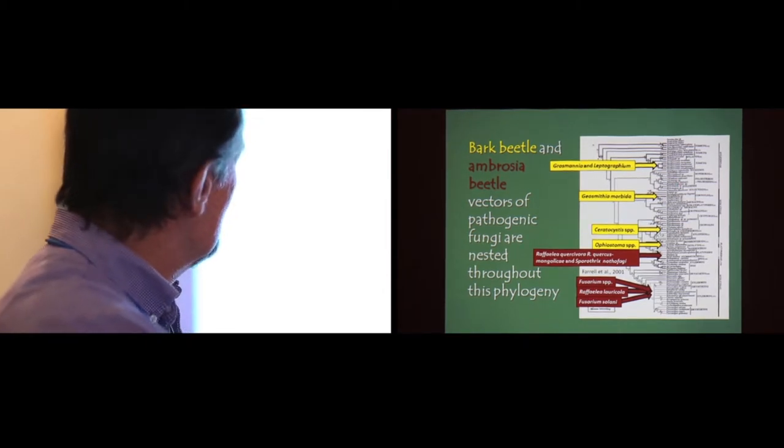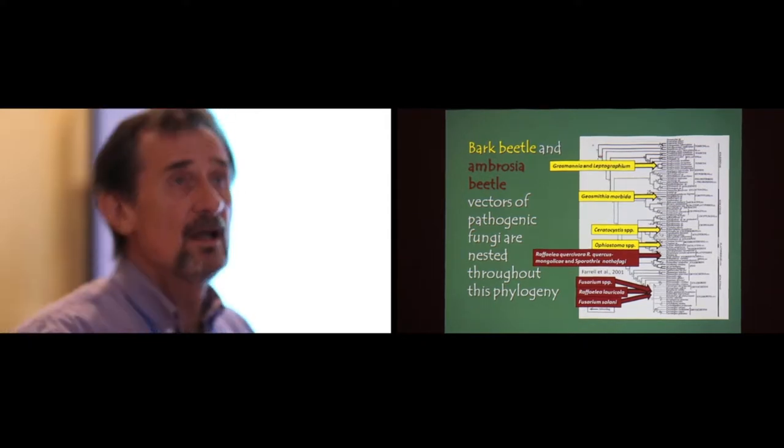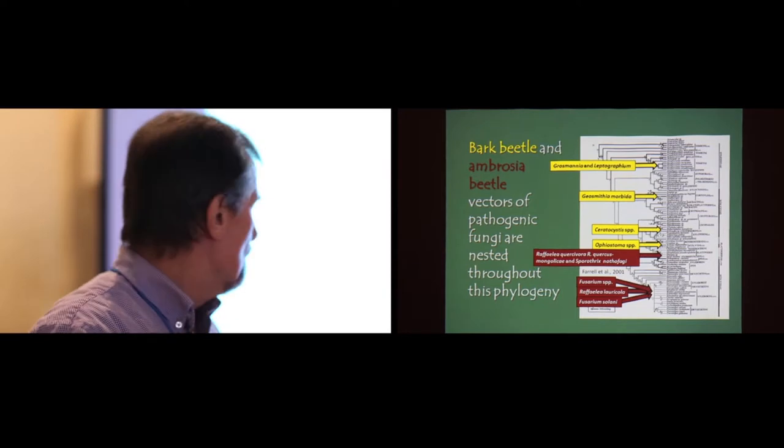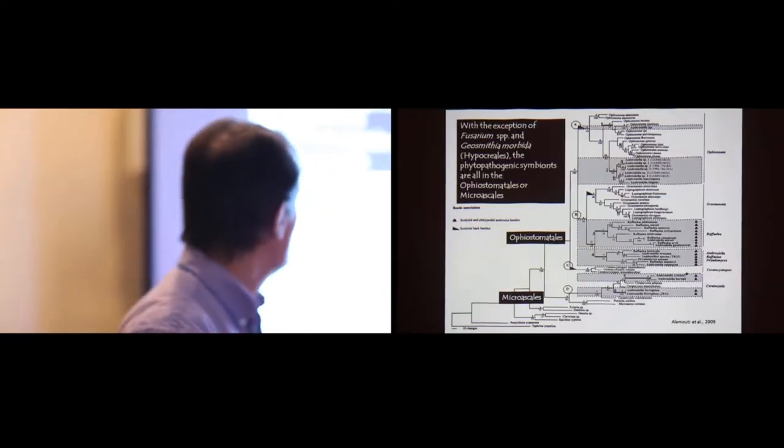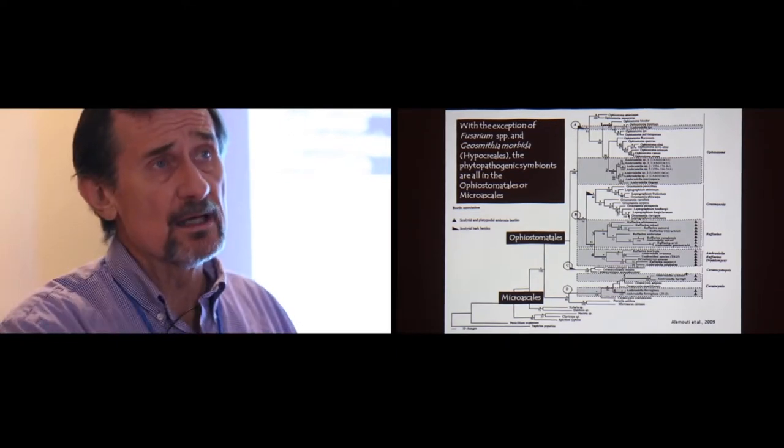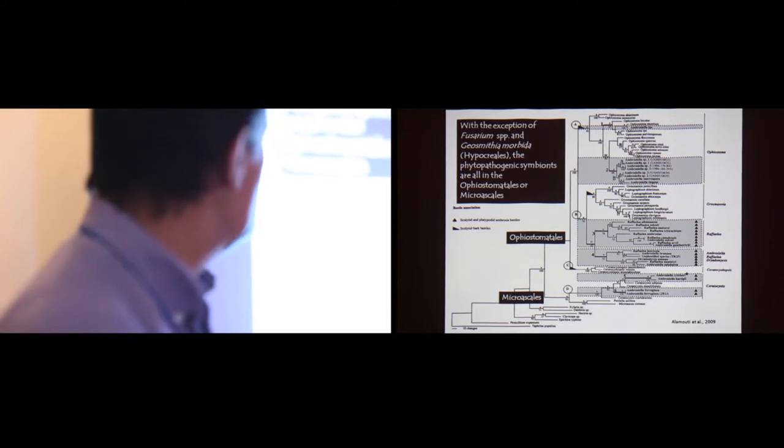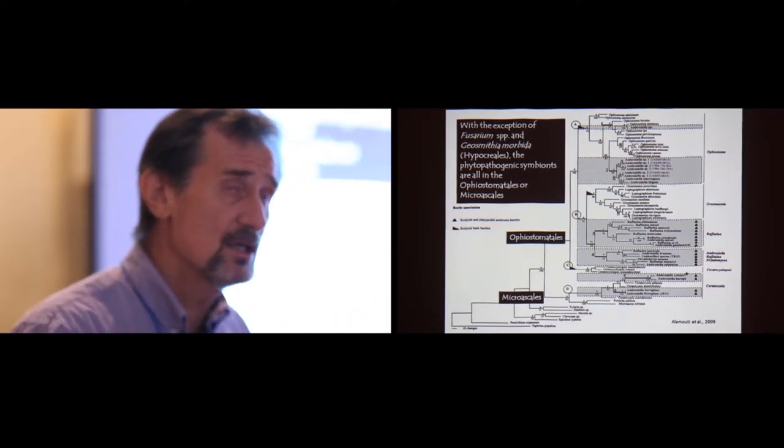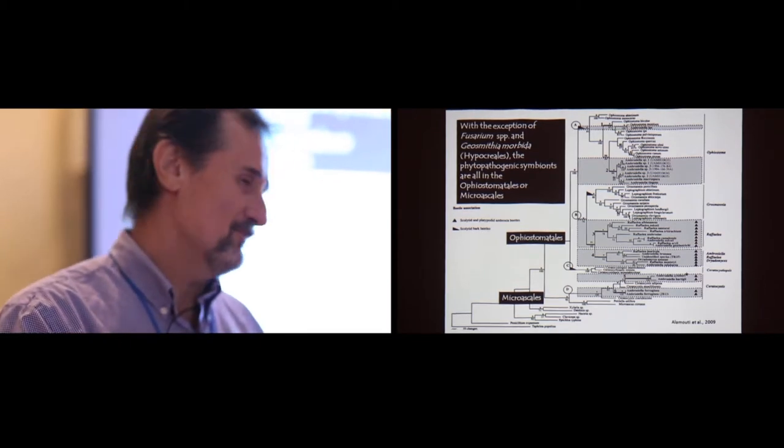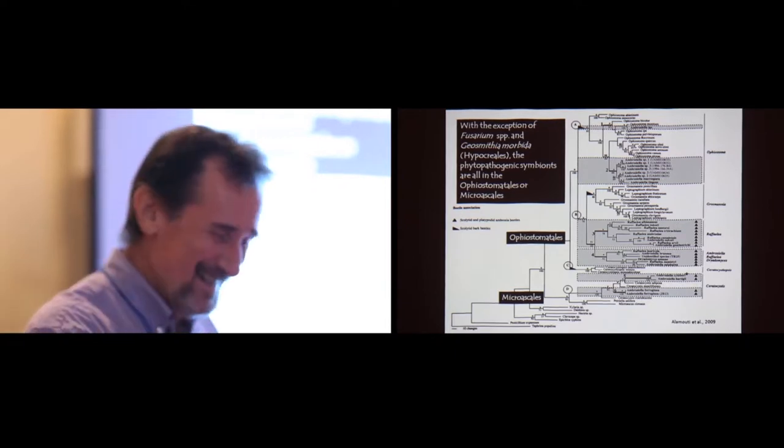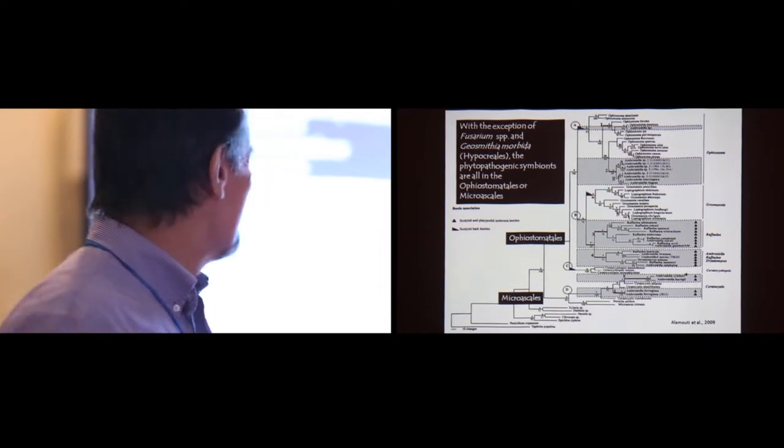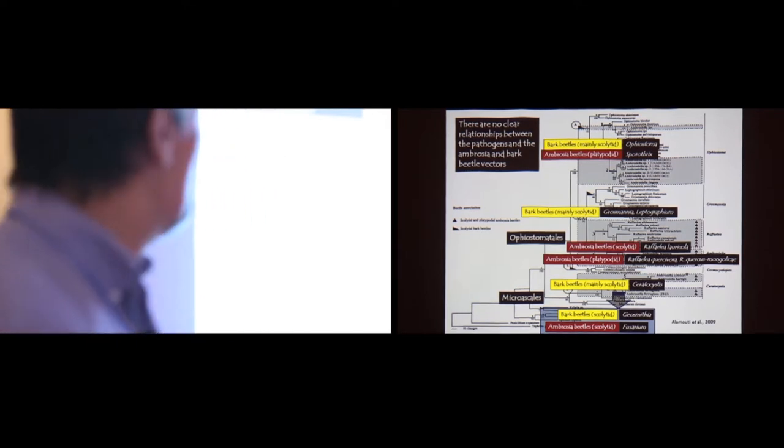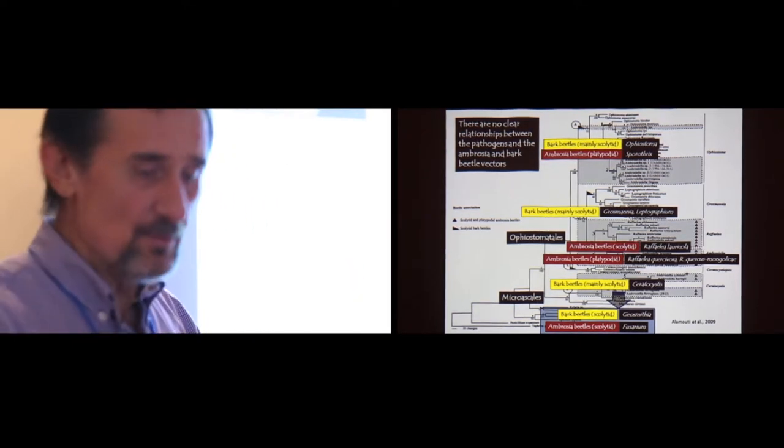So all the yellow ones are bark beetles. And these are species or genera of bark beetle associated tree pathogens. And then the corresponding in burgundy down here are ambrosia beetles and the pathogens that are associated with them. If we turn that around and look at this phylogeny from the paper that Kerry O'Donnell showed in his talk this morning, with the exception of the Fusarium species and Geosmithia morbida, this pathogen that causes this thousand cankers disease, those are in the Hippocriales, the other ones are in either in the Ophistomitales or the Microascales. And again, if you superimpose upon them, the corresponding vectors, they're all over the place. There's no real consistent relationship that I can discern out of that.